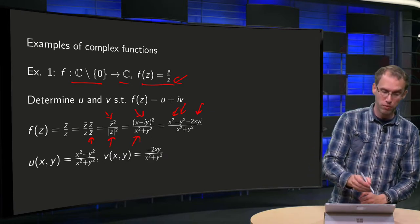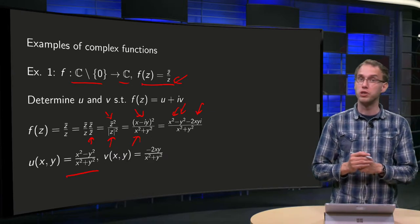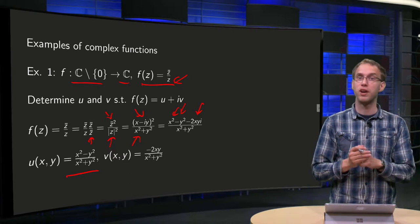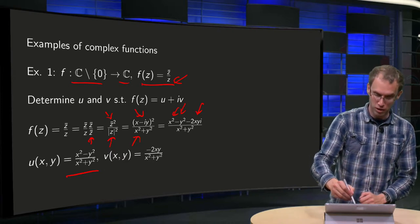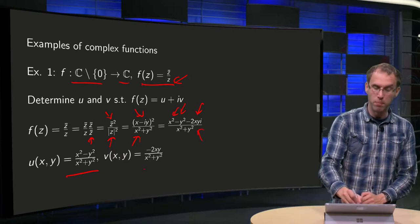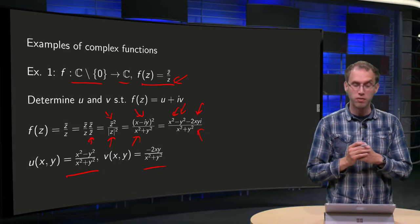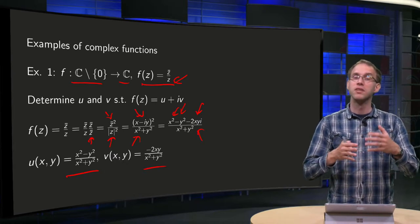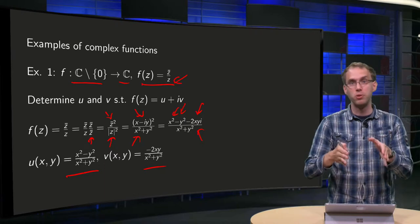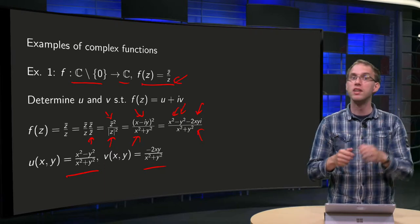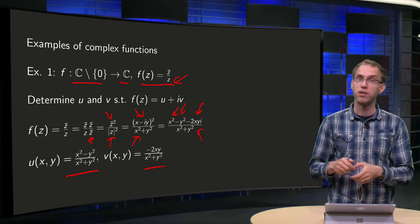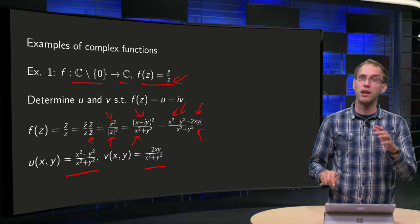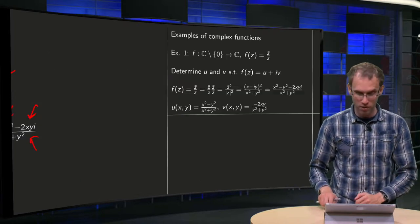We can read off what our u and v's are. Our u is just (x² - y²)/(x² + y²), and our v, the imaginary part over here, minus 2xy divided by x² plus y². So, going from f(z) to u and v is not hard at all, just plug in z equals x plus iy and z̄ equals x minus iy, and do it a bit smart whenever possible.